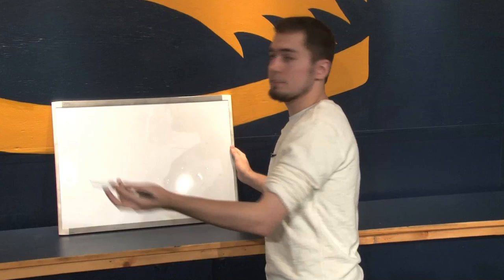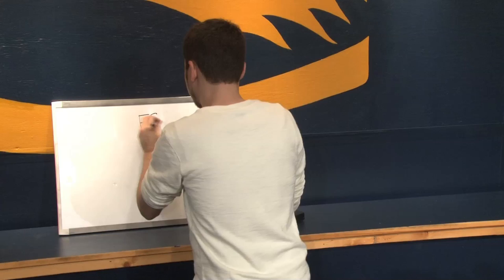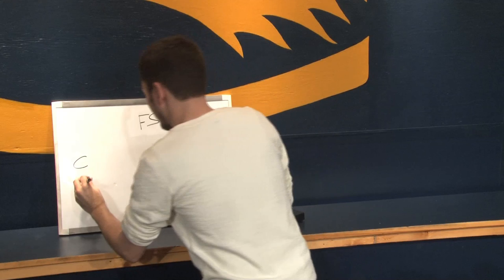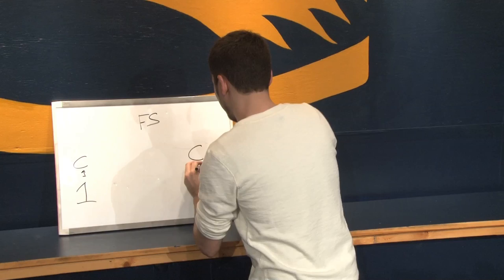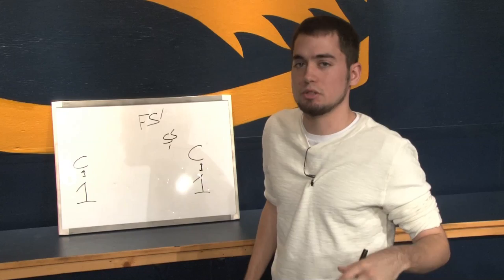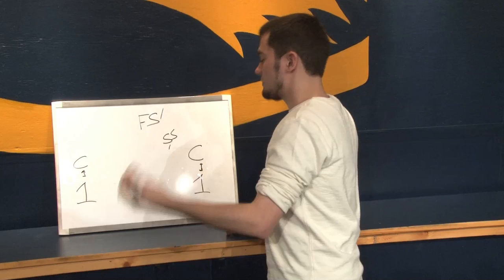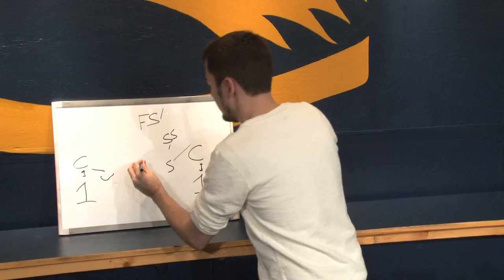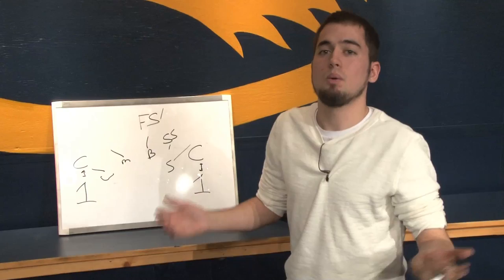We're going to start with cover one. You have your free safety in the middle of the field, two corners, and your receivers labeled number one on each side. The cornerbacks are in man-to-man with the free safety playing the deep middle. Then usually you have your strong safety down in robber coverage — he's reading either the routes or the quarterback's eyes and making his decision based off that. He's not really in man coverage on somebody. In cover one your outside linebackers usually have curl-flat, and your inside linebackers might be playing hook zones to help take away each zone a passing offense is looking to attack.